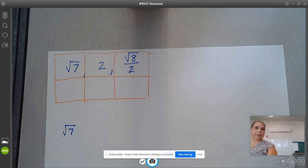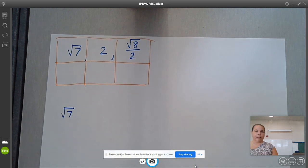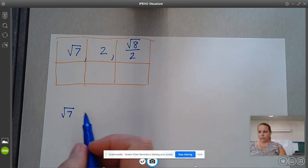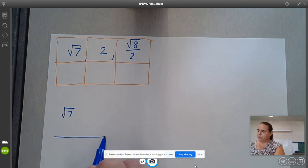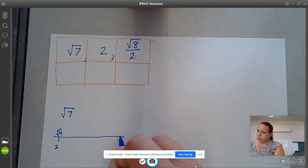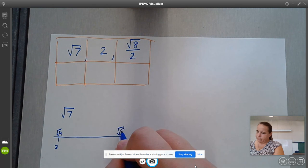Anytime I see a square root, I think: is this a perfect root or a non-perfect root? 1 times 1 is 1, 2 times 2 is 4, 3 times 3 is 9. It is not one of those numbers, but it is between 4 and 9. So I'm going to put that on my number line. The square root of 4 is 2, and here's 3, which is the square root of 9.